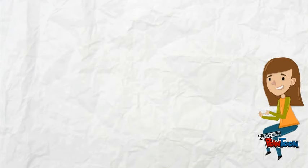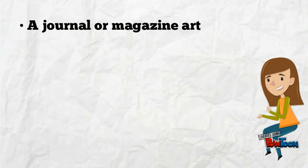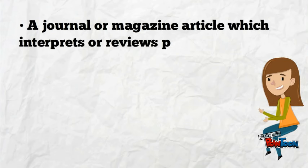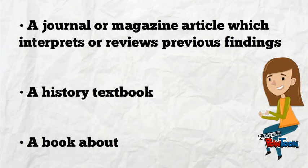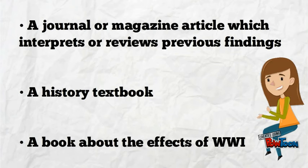Some examples of secondary sources include a journal or magazine article which interprets or reviews previous findings, a history textbook, or a book about the effects of World War I.